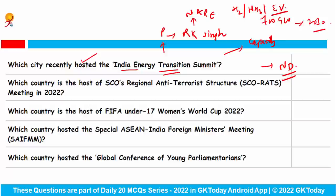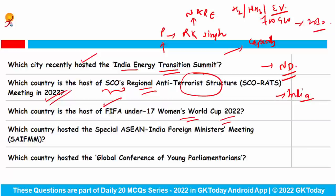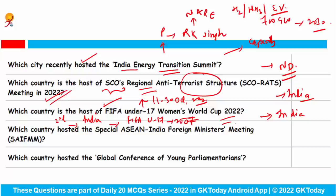Which country is the host of the Shanghai Cooperation Organisation's Regional Anti-Terrorist Structure Meeting in 2022? The answer is India. Which country is the host of FIFA Under-17 Women's World Cup 2022? India is the host. This event will take place from 11th to 30th October 2022. This is the second FIFA tournament hosted by India; the first was the FIFA Under-17 World Cup in 2017.